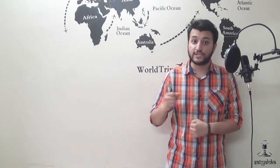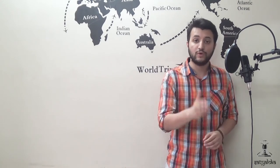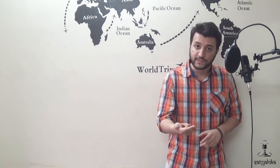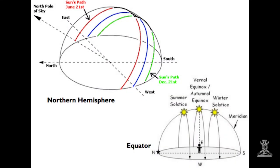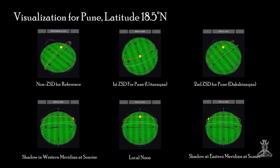There are only two days in a year when the sun is exactly at the zenith and no shadow is cast at local noon, and this also depends on your latitude. These days are called the zero shadow days. This phenomenon can be experienced in India towards the south of the tropic of Cancer. The first zero shadow day falls between April 9 and June 21, and the second falls between June 21 and August 30.